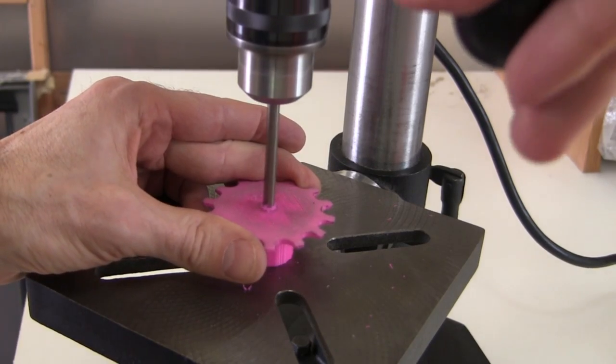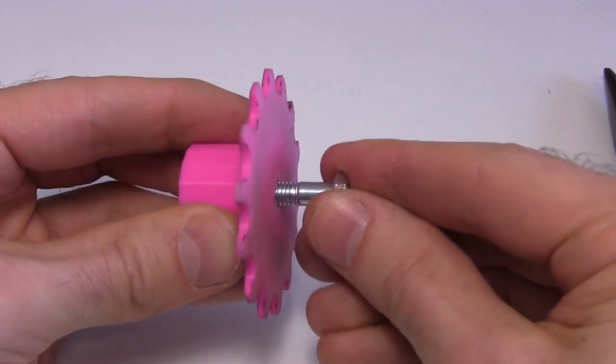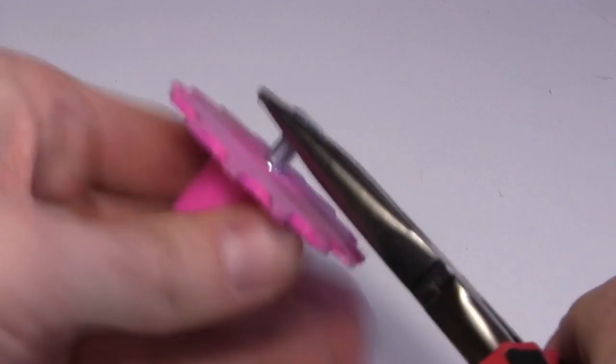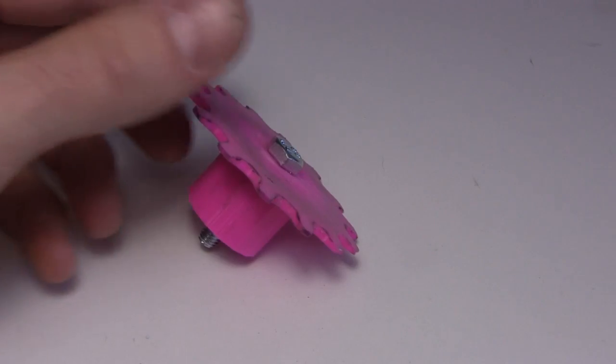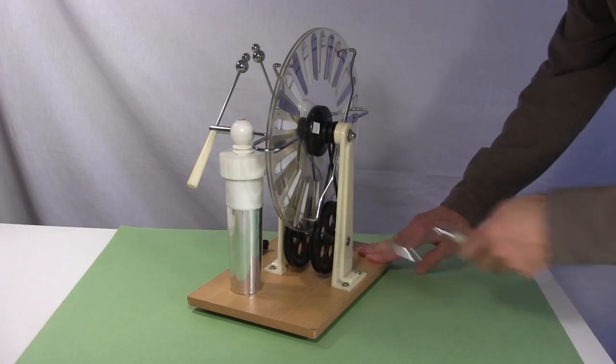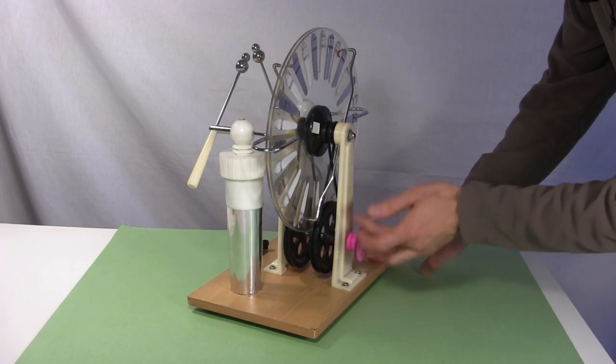Next I drill out the hole through the middle a little more, so that my bolt goes on with the tight fit, not requiring anything else to grip on. And there's the finished sprocket. I then remove the old crank from the Wimshurst machine and put on the sprocket.